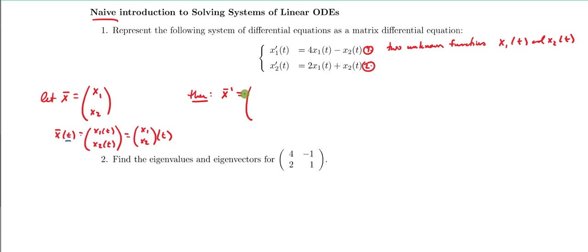And so the derivative of our unknown column vector there is simply x1 prime, x2 prime. Or if we wanted to be a little bit more precise, we'd say x prime of t, and that would be x1 prime of t, x2 prime of t.